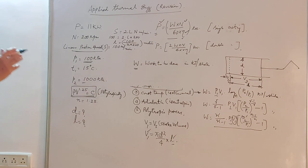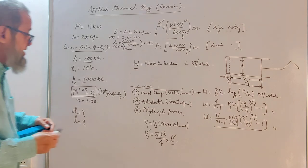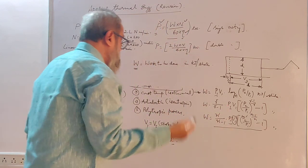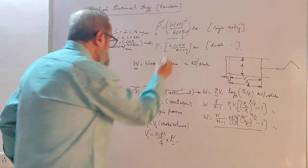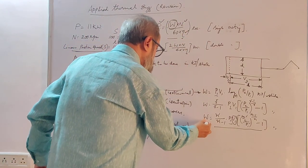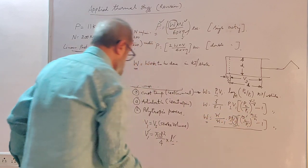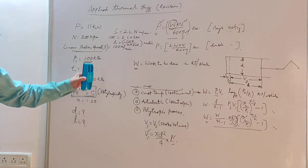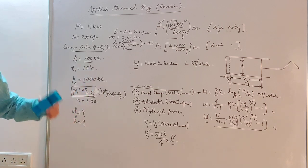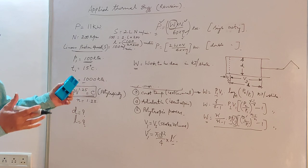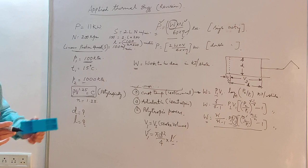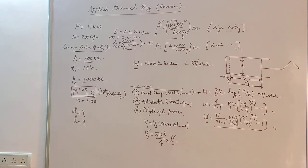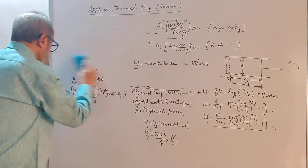I think you will be able to do it yourselves. The formula to be used is: P = W·N/60 with efficiency as 1 if not given. Substitute the values, get W. Then use the polytropic formula, substitute P1, P2, n, get V1. Then V1 = π·D²/4 × L. I hope you can do it yourselves. I am putting it on a video so that other students also get benefited. He has sent me 3–4 problems; I will explain them one by one like this.